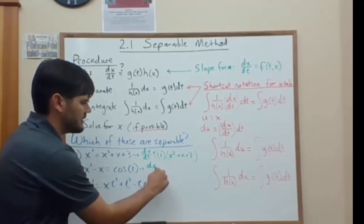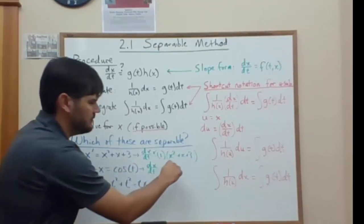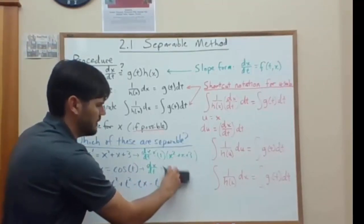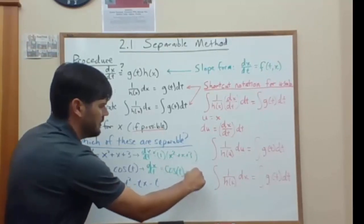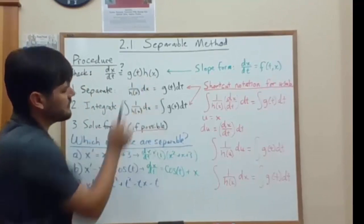x prime will be dx dt, and we'll add x to the other side, x plus, oh might as well do it in the other order, cosine of t plus x. We want to get it as a function of t times a function of x.